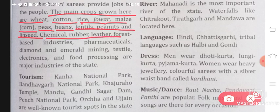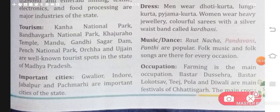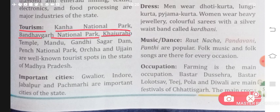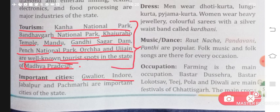Major industries of Madhya Pradesh include chemical, rubber, leather, forest-based industries, pharmaceuticals, diamond and emerald mining, textile, electronics, and food processing. Tourism highlights include places that are must-visits if you go to Madhya Pradesh. Important cities are Gwalior, Indore, Jabalpur, and Pachmarhi — these are the most important cities of Madhya Pradesh.